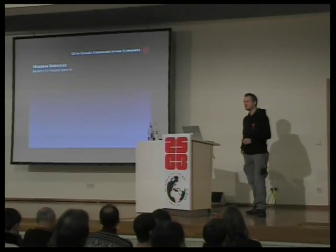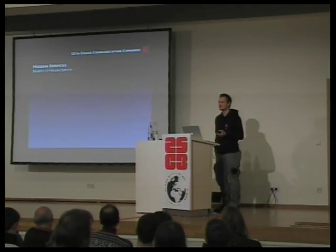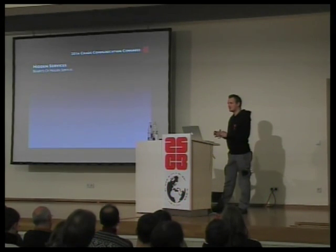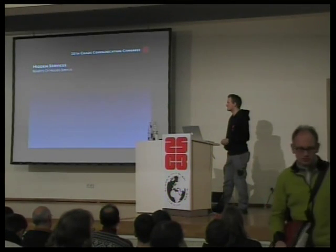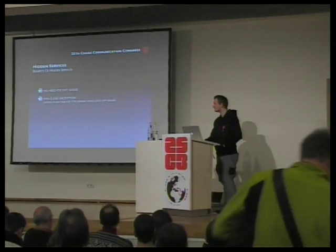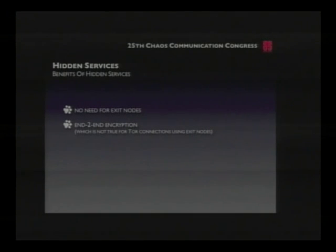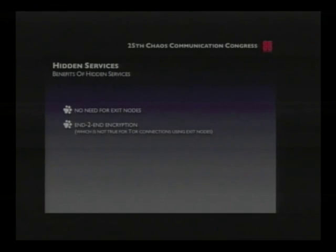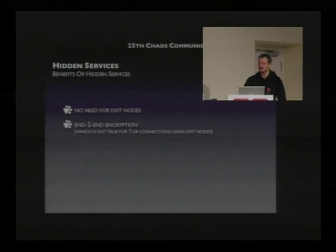As soon as you enter the onion address inside an application that uses Tor's SOCKS interface — for example into a web browser like IceWeasel — the interception will be done by Tor and you will be routed to the service. The benefits of location-hidden services are that you do not need exit nodes anymore. Exit nodes are problematic: very few people want to run them, depending on the country they live in. Also, connections through exit nodes into the real internet are unencrypted, whereas hidden services provide end-to-end encryption.